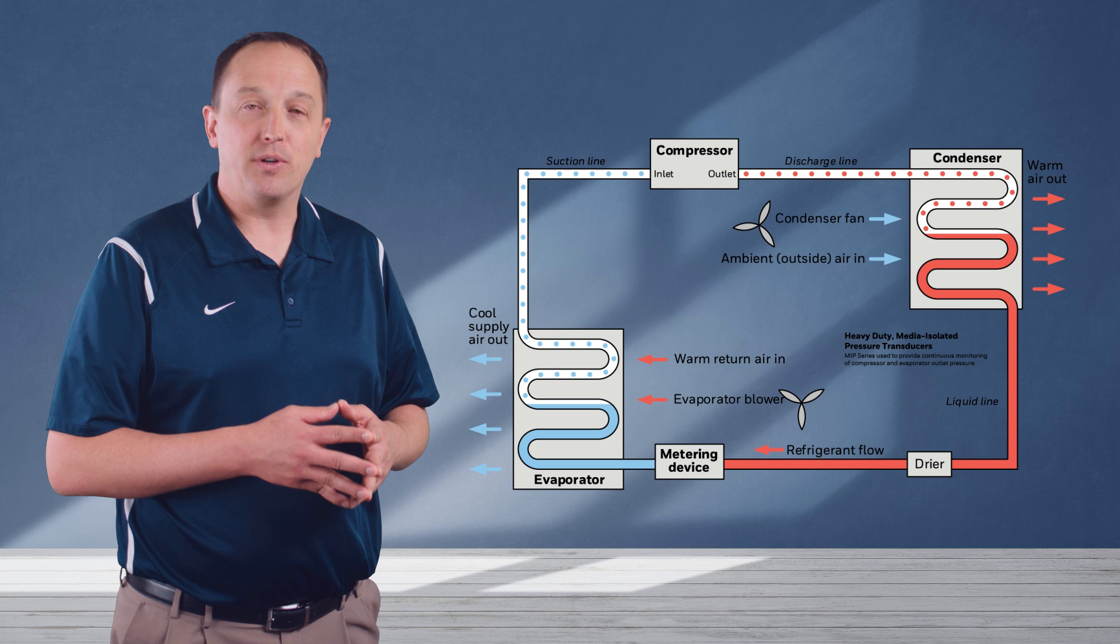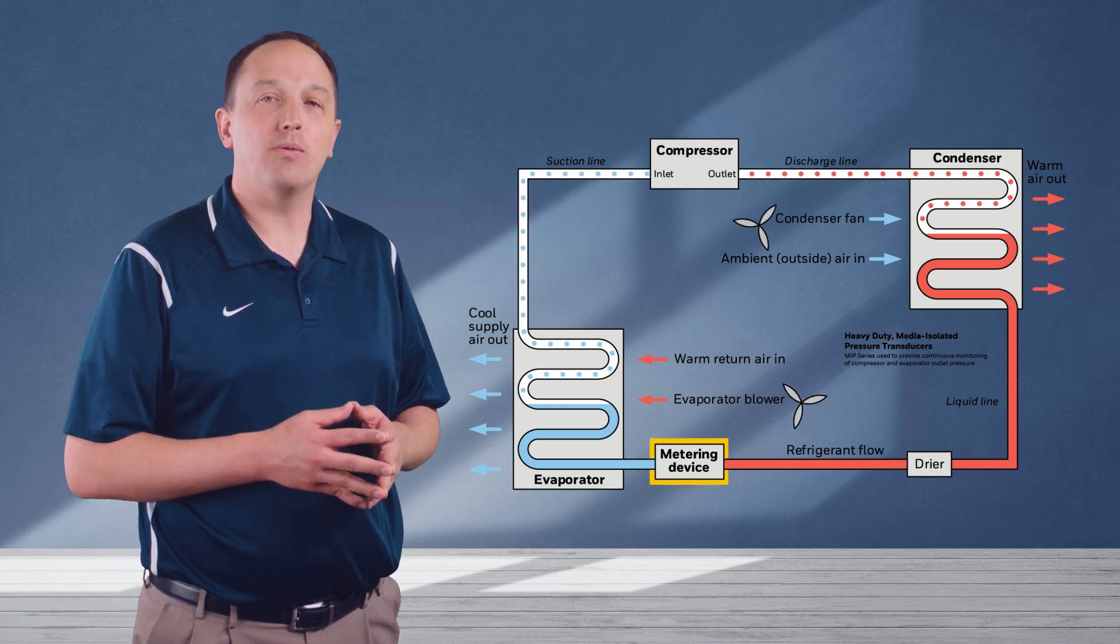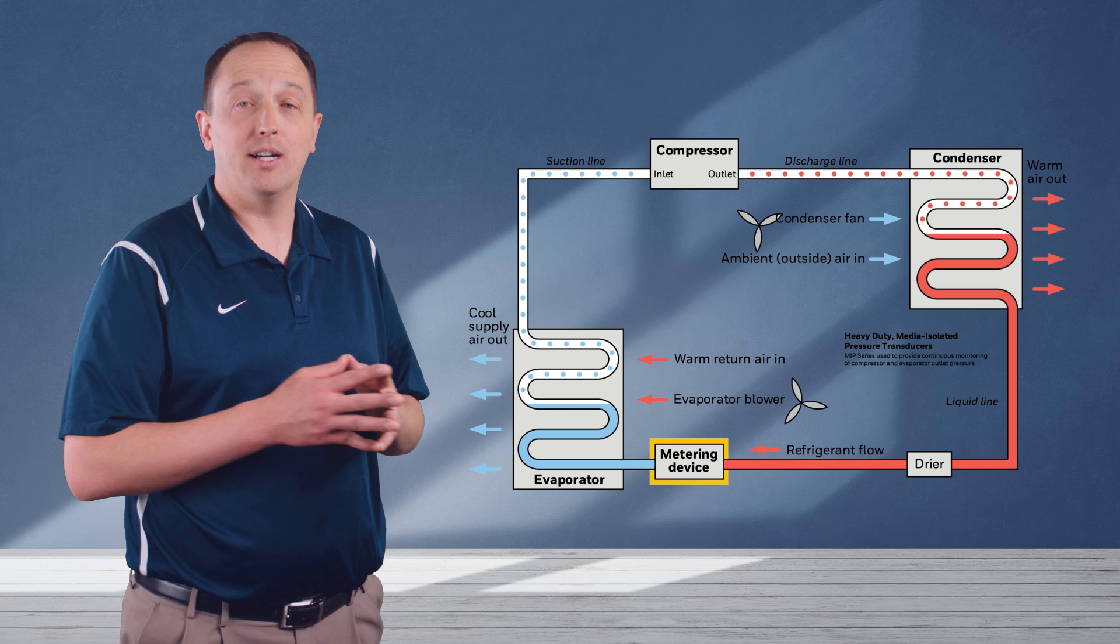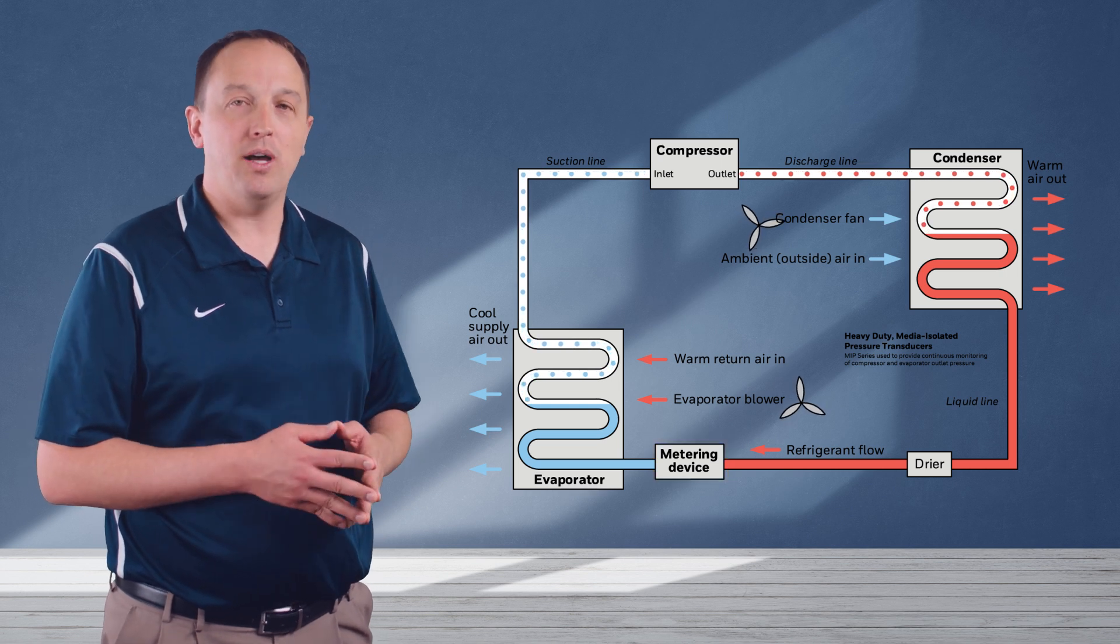The hot liquid refrigerant is forced through a flow restricting metering device which reduces the pressure on the liquid and consequently lowers the temperature as well.